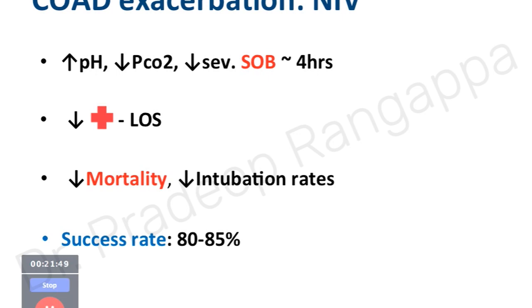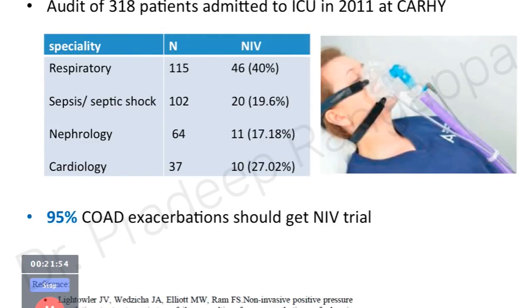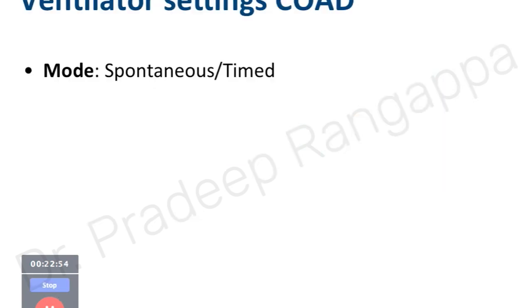NIV in COPD is considered a quality indicator — a trial is mandatorily needed before contemplating intubation unless the patient is fully obtunded with low GCS, since most respond well. In our hospital Columbia Asia, we audited 318 patients in 2011: 115 patients with respiratory failure due to infection — NIV used in 40%; sepsis/septic shock with respiratory failure — 19.6%; pulmonary edema due to CKD — 17.18%; cardiology pulmonary edema — 27.2%. The quality benchmark suggests 95% of COPD patients should receive an NIV trial before intubation.